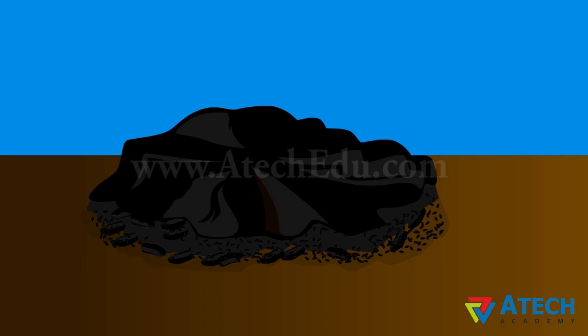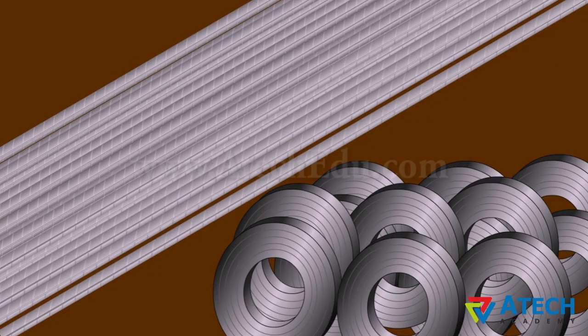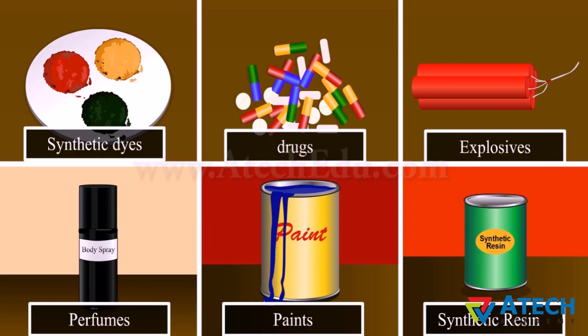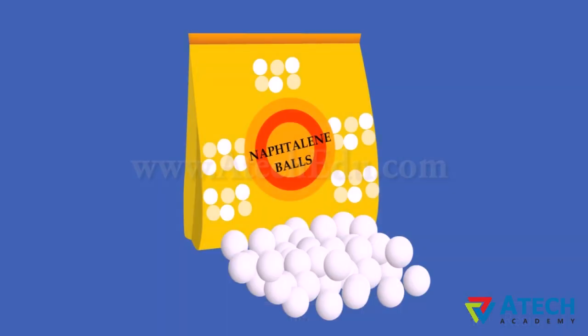Coal tar is a black, thick liquid with an unpleasant smell. Products from coal tar are used in the manufacturing of synthetic dyes, drugs, explosives, perfumes, plastics, paints, synthetic resins, etc. Naphthalene balls used to repel moths and other insects are also obtained from coal tar. Coal tar is also used for metaling the roads, though bitumen, which is a petroleum product, is being used nowadays for this purpose.